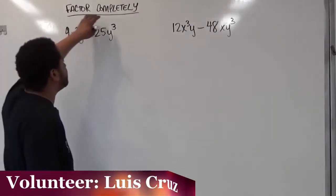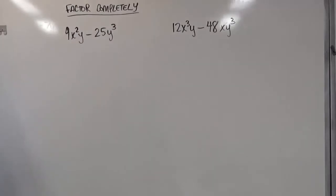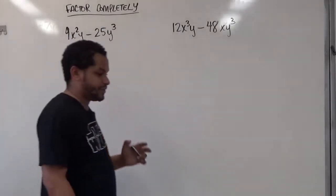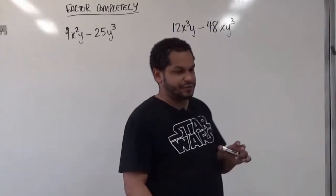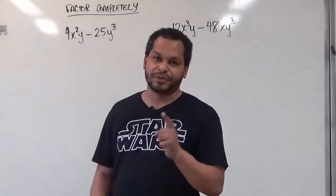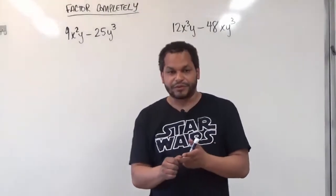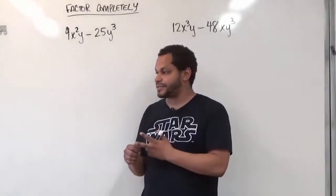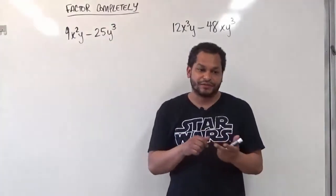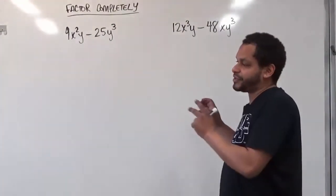When you're told to factor completely, you have to take a problem and different special problems like difference of two squares will take different precedences when factoring. Sometimes you have to look for the GCF, which is always the first step in factoring. Then we look for factoring capabilities for the problem, like is it a difference of two squares, difference of two cubes, or sum of two cubes?